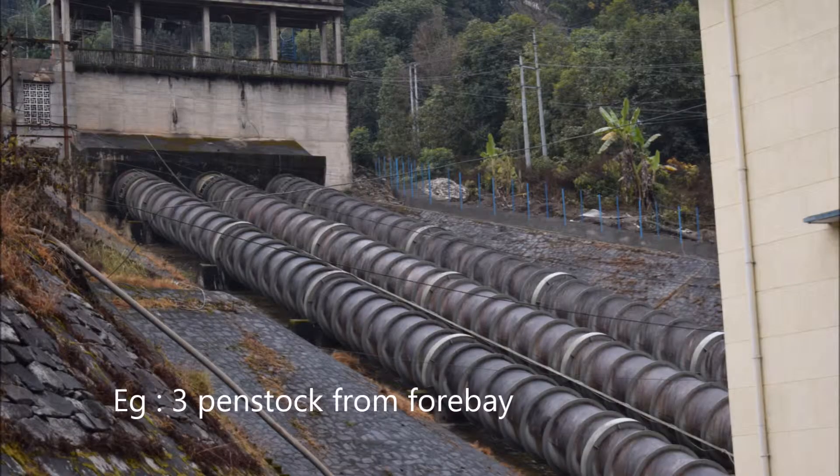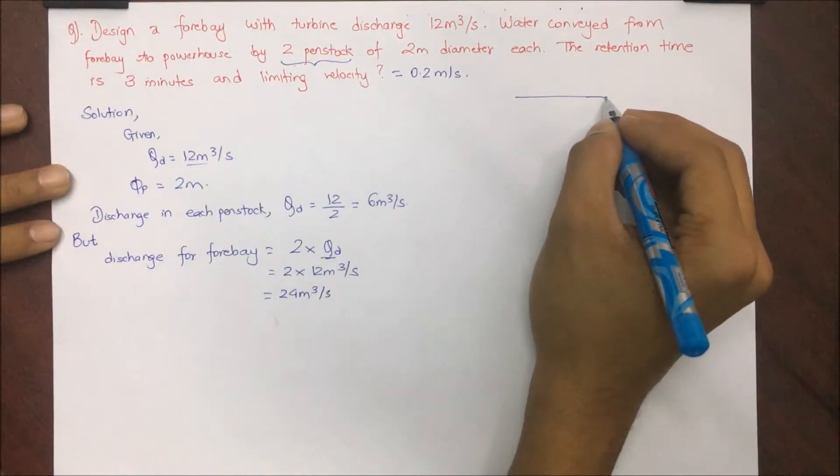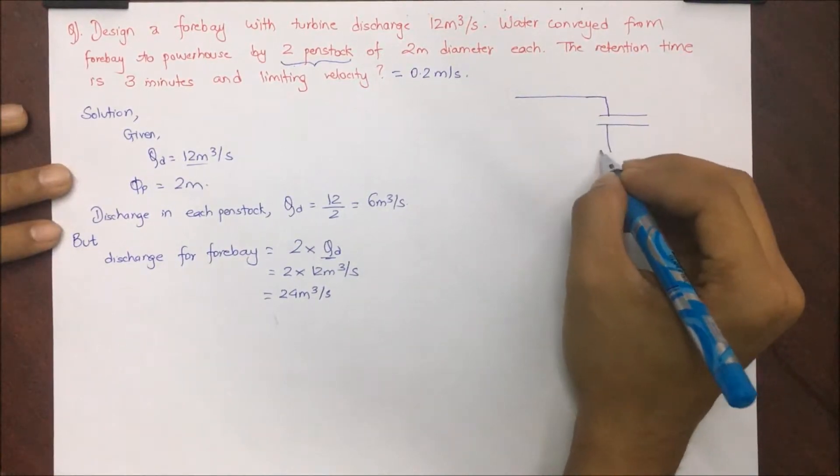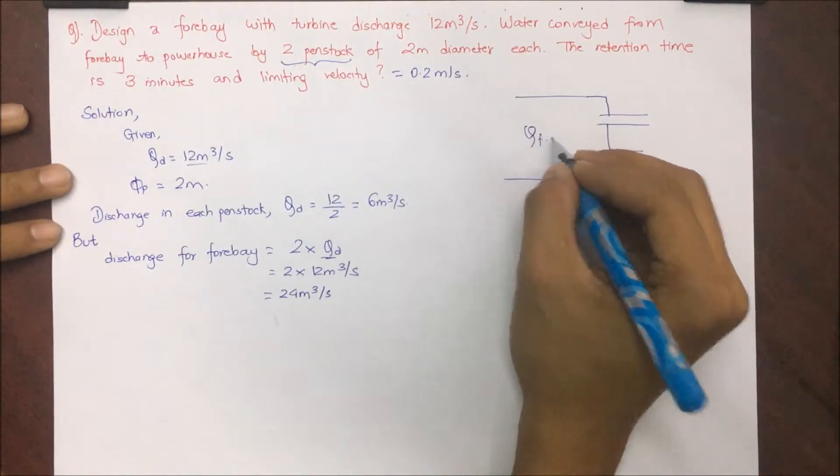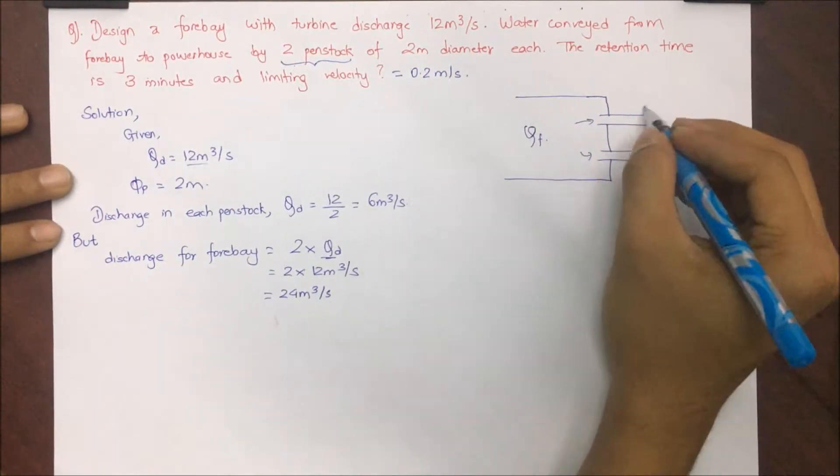Let's draw a figure showing what it looks like in plan. We are providing two penstocks and this is the forebay that has Qf discharge and design discharge Qd, that is half of the design discharge.